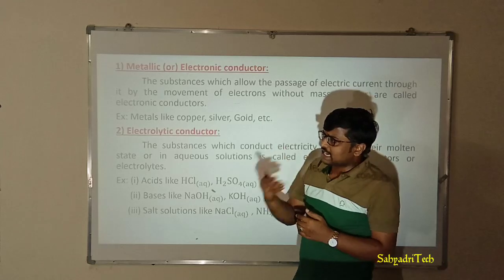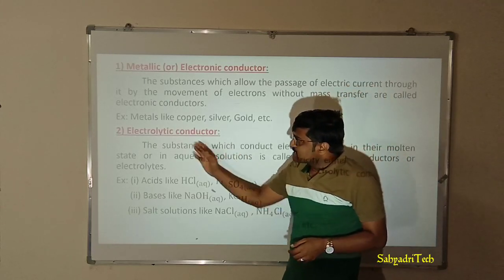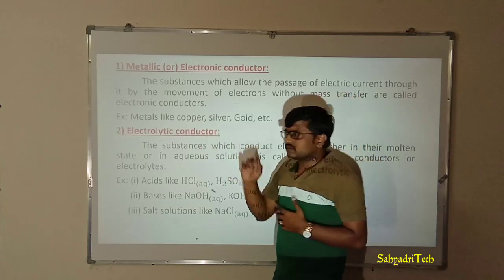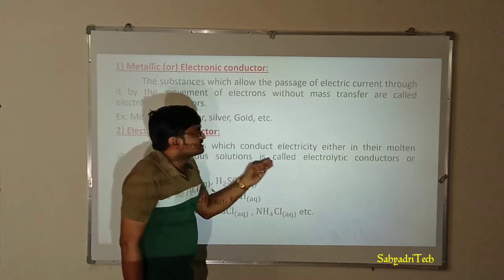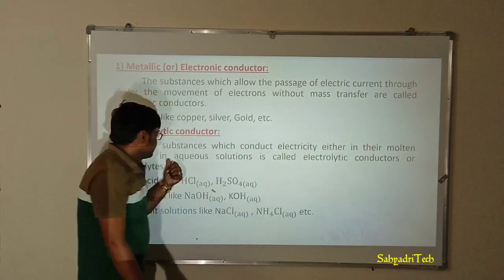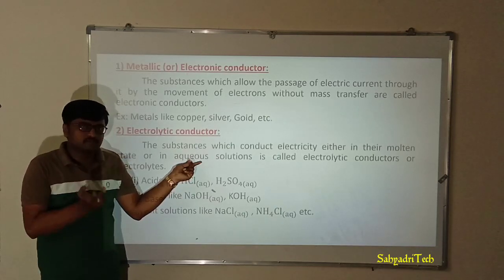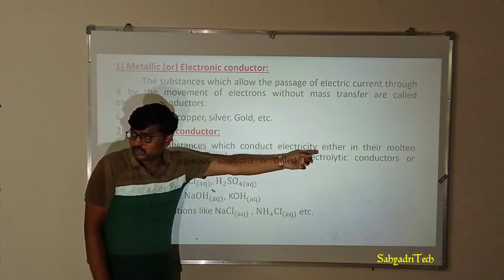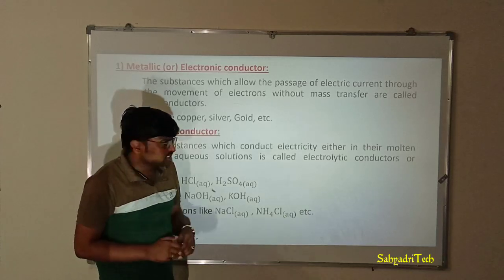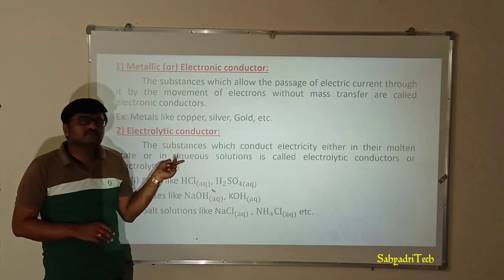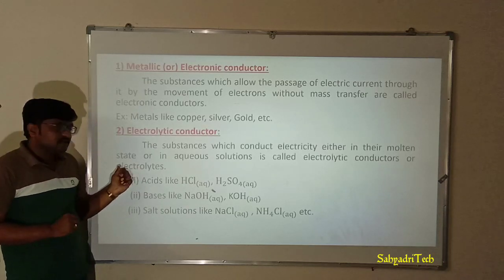When an electrolyte is added to a suitable solvent and the resulting solution conducts electricity, it is considered an electrolytic conductor. Electrolytic conductors may conduct electricity either in their molten state or in aqueous solution. So the definition: substances which conduct electricity either in their molten state or in aqueous solution are called electrolytic conductors, ionic conductors, or simply electrolytes.